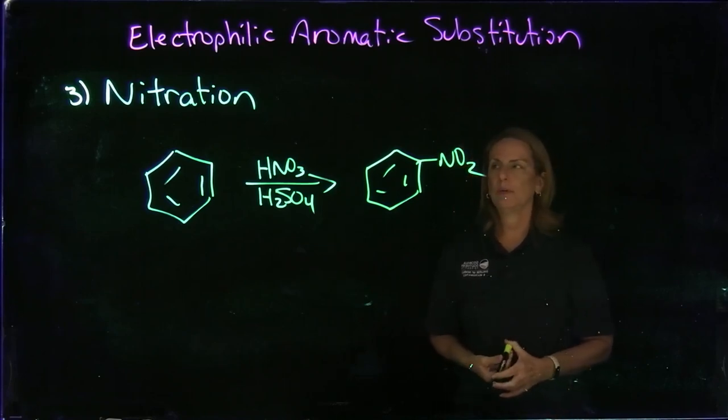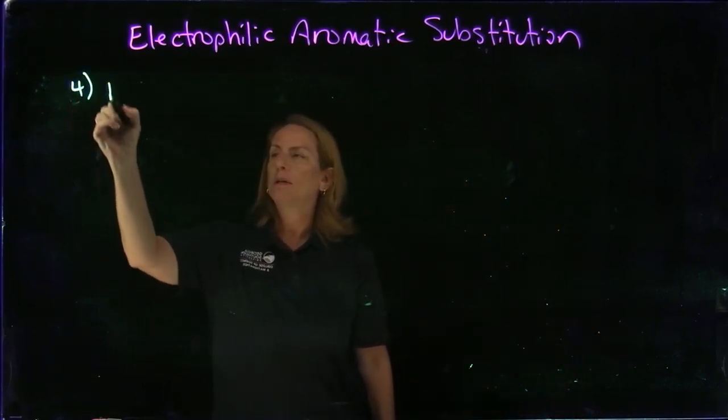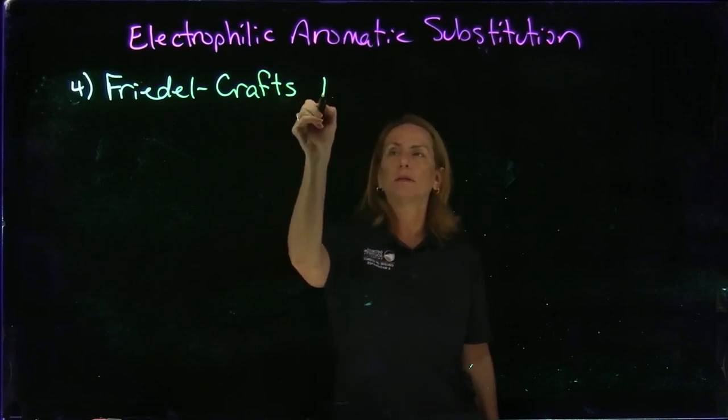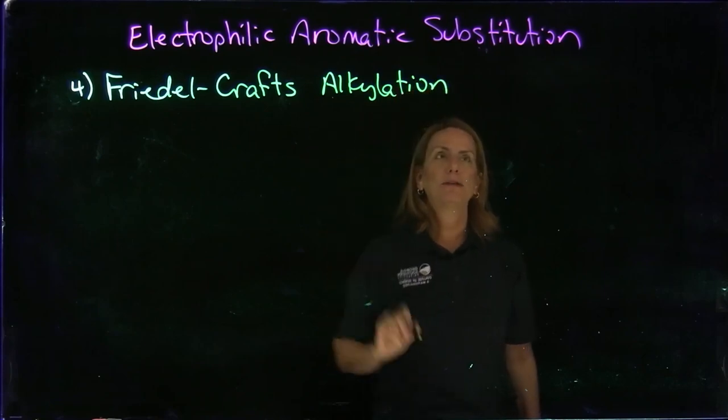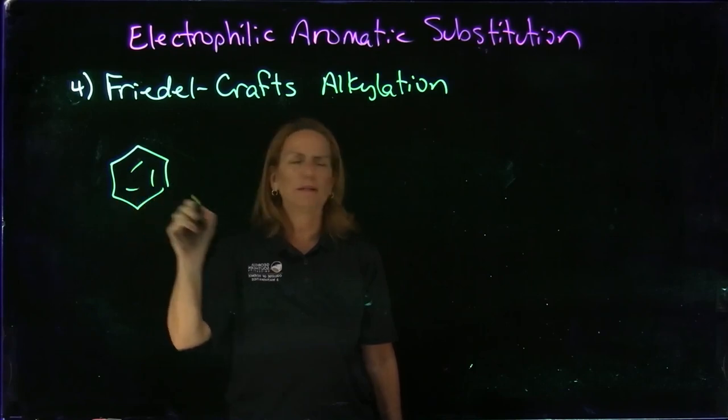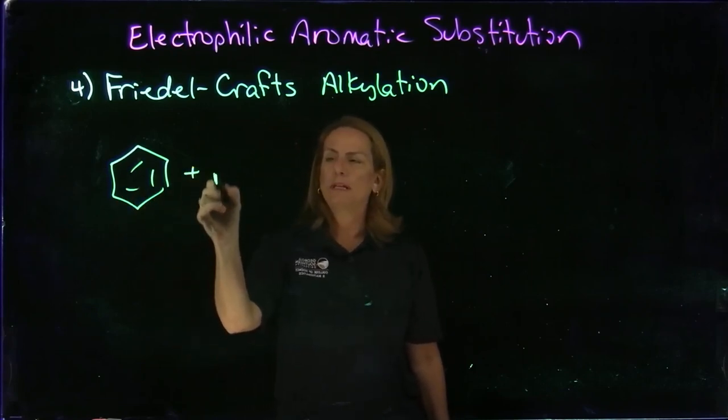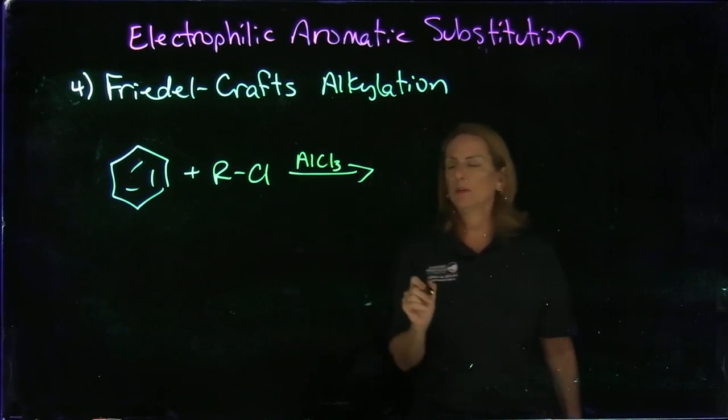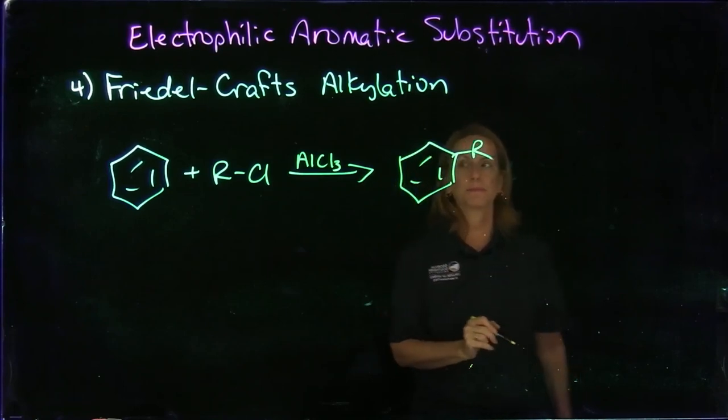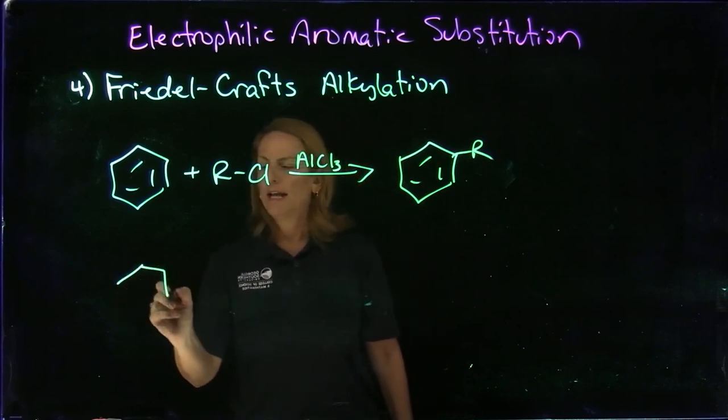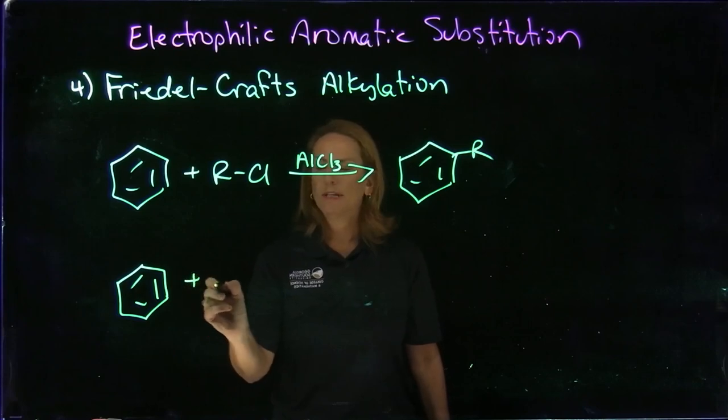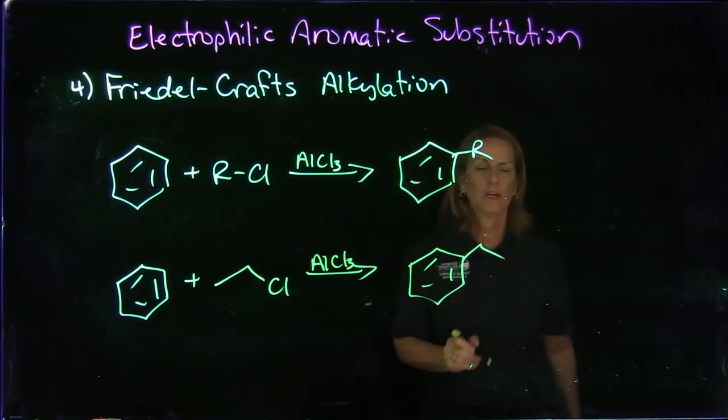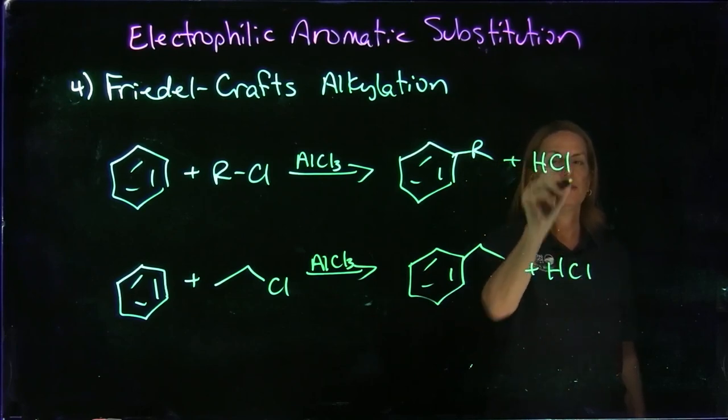The fourth reaction is Friedel-Crafts alkylation, named after two scientists who developed this. As you can imagine, we're adding an alkyl group. This one's complicated—it varies depending on whether it's primary versus tertiary. But generally speaking, if you have an alkyl halide with AlCl3 catalyst, rather than adding the chlorine, you'll be adding the R group. There can be rearrangement, which could be a negative thing. For example, with ethyl chloride, you would end up adding the ethyl group. The other product would be HCl.